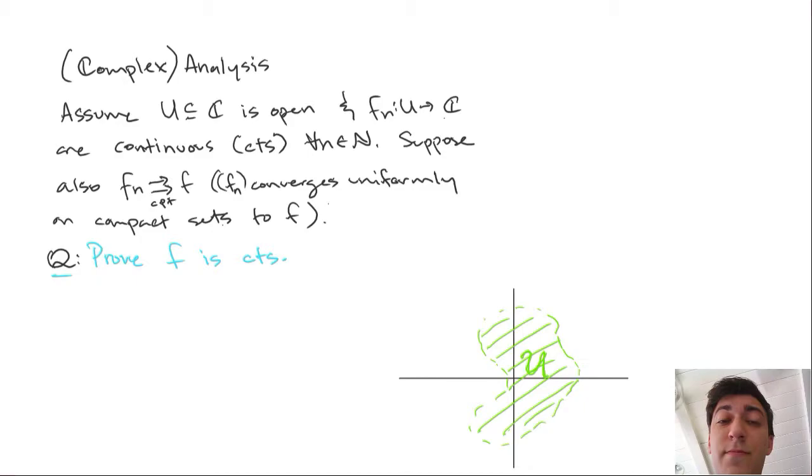So let's assume that we have an open subset U of the complex plane, and we have some sequence of functions Fn defined on U with values also complex numbers. Each of these Fn's is also continuous, and we have something called uniform convergence on compact sets. So the last thing we suppose is that these Fn's converge uniformly on compact sets to some F.